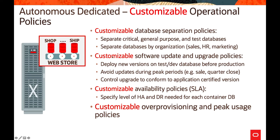Database separation policies allow software updates to be managed differently for test, dev, and production environments. You can avoid updates during peak periods — for example, avoiding patches during the Christmas season — and control upgrades to confirm application-certified versions. In terms of availability policies, a specified level of HA and DR is available for each container database. Customizable over-provisioning and priority queuing policies for non-production databases allow developers and QA to fully utilize the infrastructure.